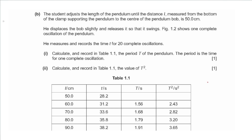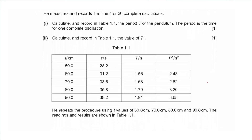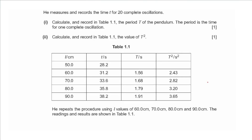He displaces the bob slightly and releases it so that it swings. Figure 1.2 shows one complete oscillation of the pendulum. He measures and records the time t for 20 complete oscillations. Calculate and record the period T of the pendulum — we divide by 20 since the period is the time for one complete oscillation. Dividing 28.2 by 20 gives 1.41, and squaring that gives 1.99.